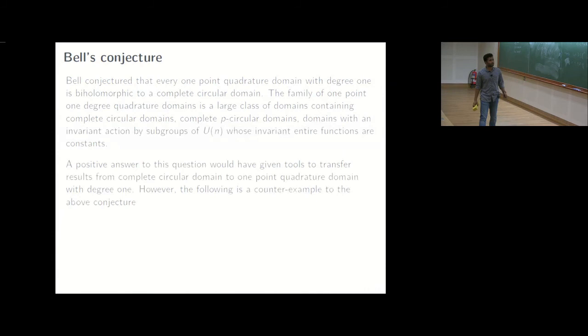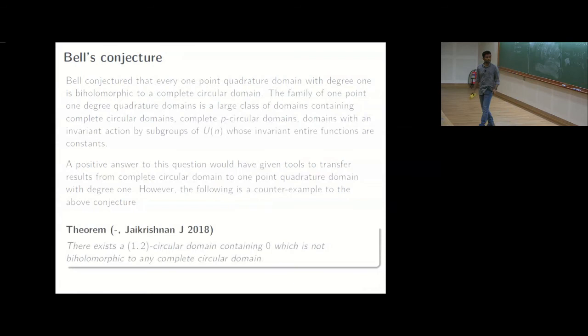Okay, so why was this conjecture useful or important, well we could pull back the multitude of results that we have on complete circular domains to 1.1 degree quadrature domains, if we could establish that. And in that process we realized that the conjecture is false and the following in a joint work with J.K. was a counterexample to the conjecture. It said that there exists a 1.1 degree quadrature domain which contains zero, but which is not biholomorphic to any complete circular domain.